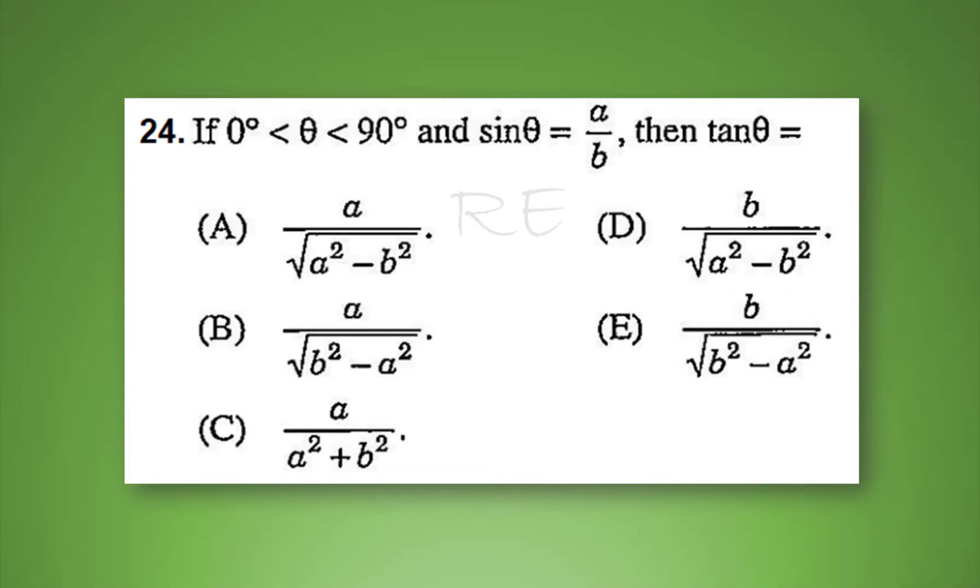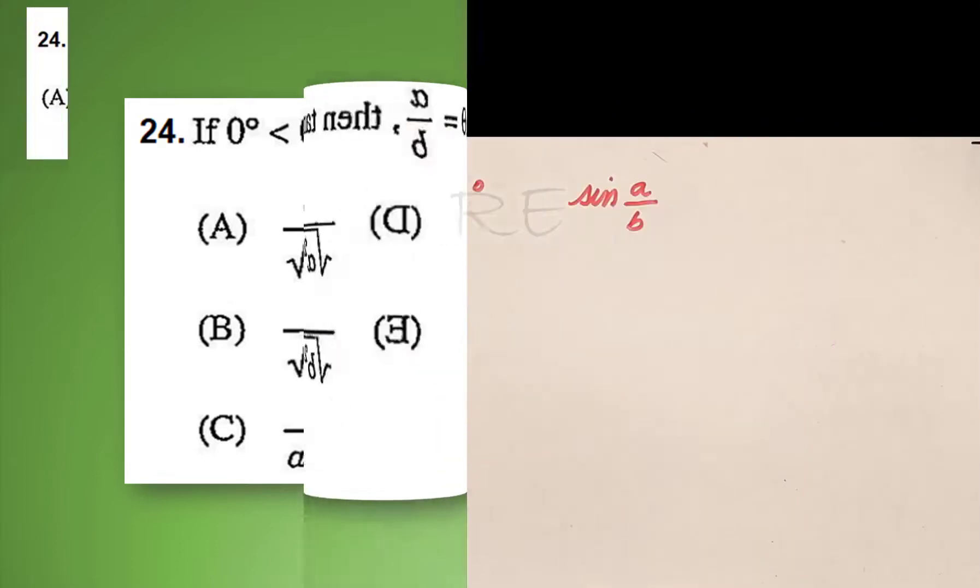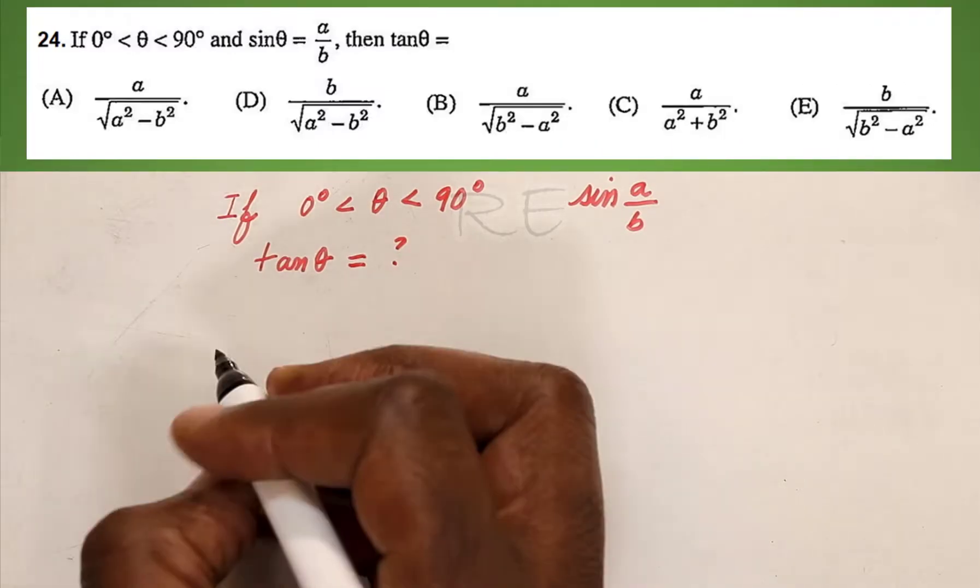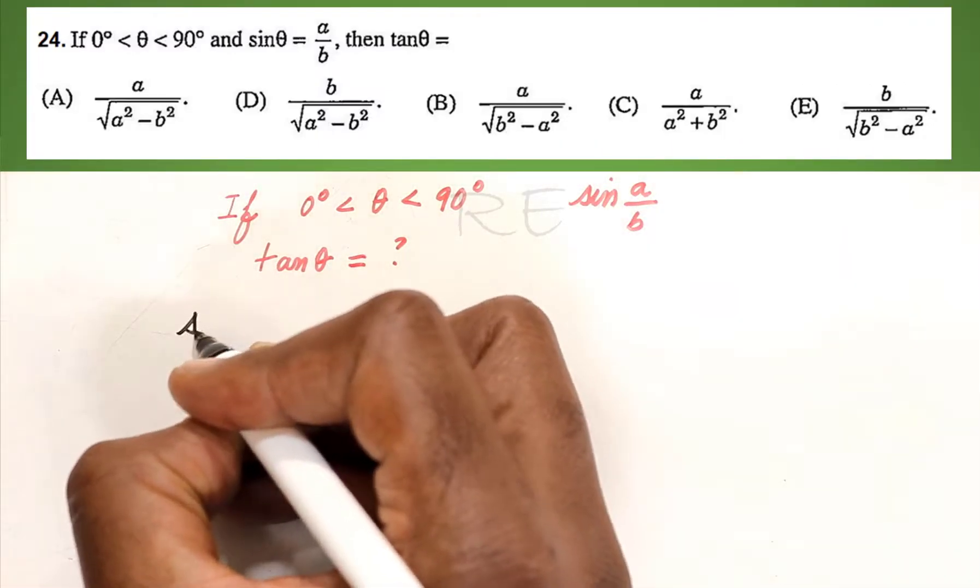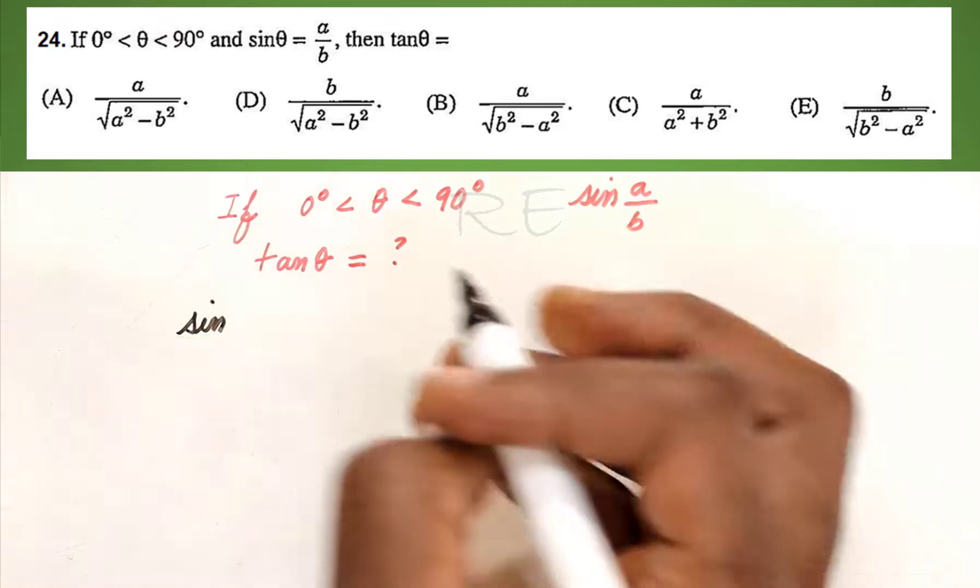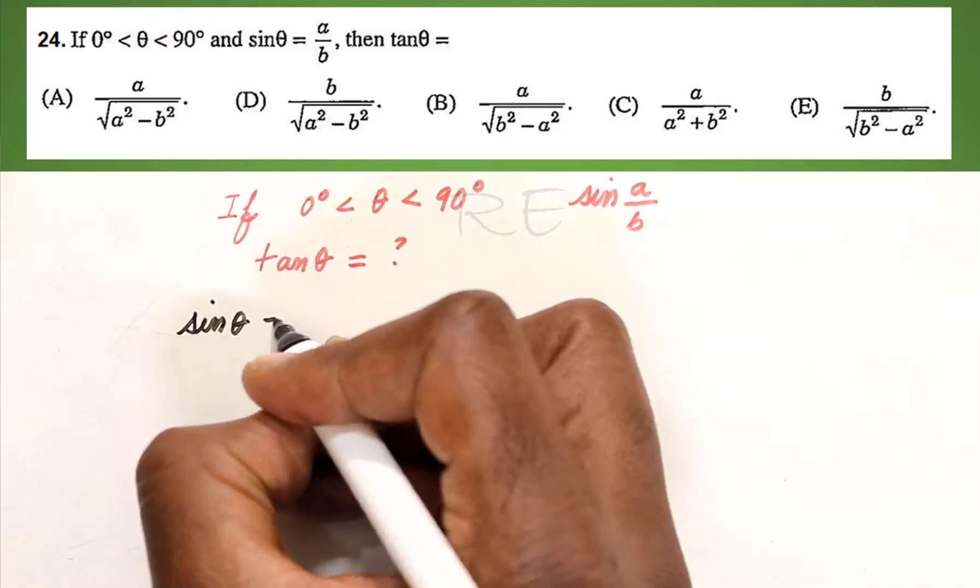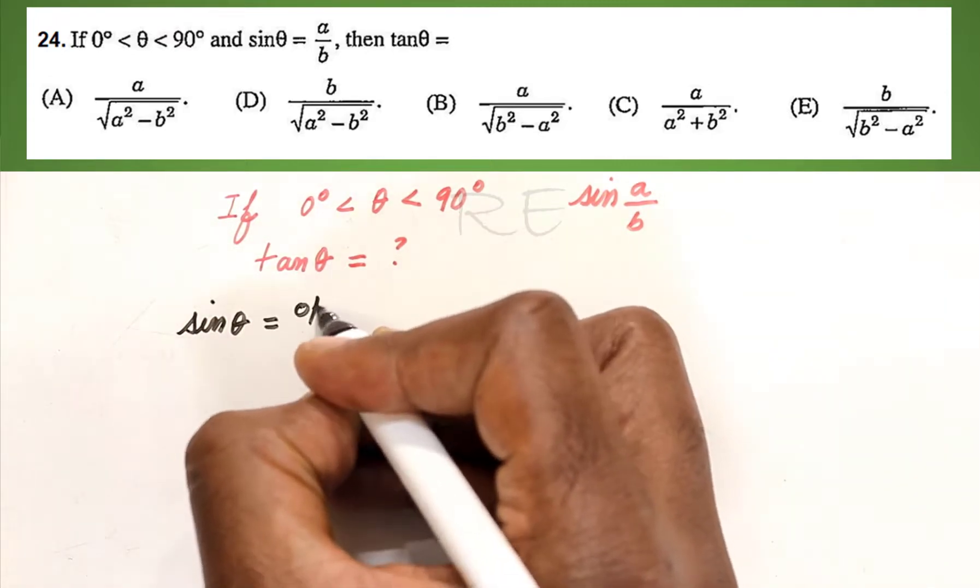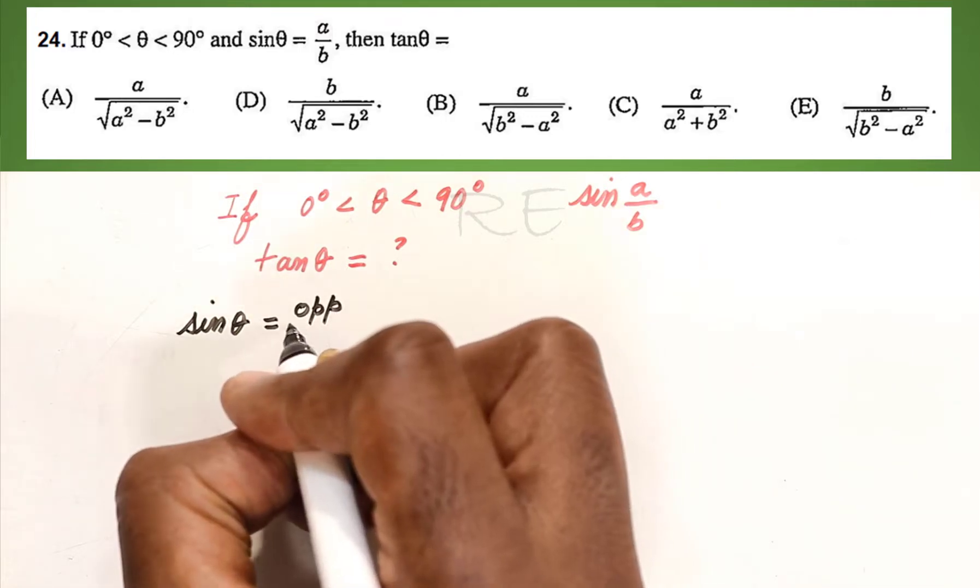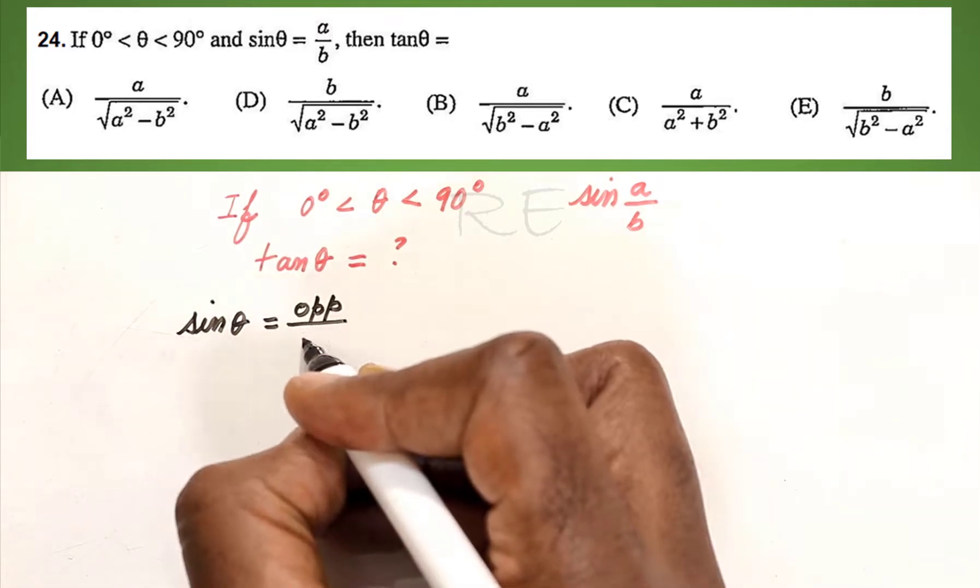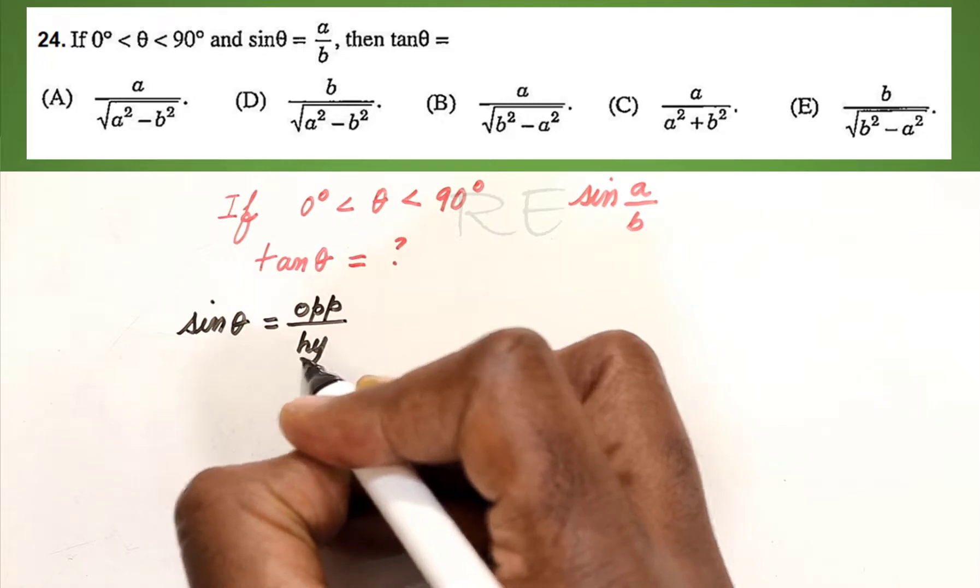If theta is between 0 and 90 and sine theta is equal to A over B, find tangent theta. Now, sine theta, for that matter sine of any angle, is equal to the opposite side over the hypotenuse.